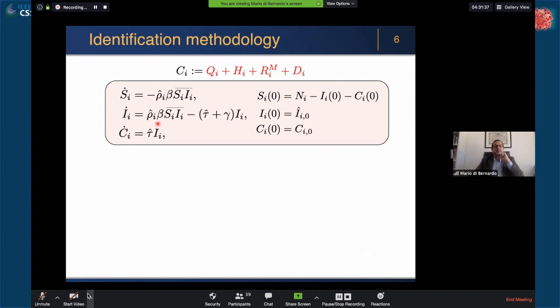You see here with the hats the parameters being estimated. Beta are the parameters and gamma are fixed. We assume that we have some data available, as I said, the data above, in particular CI.